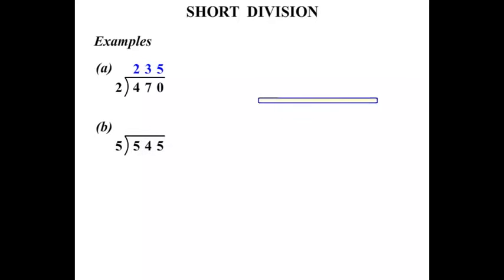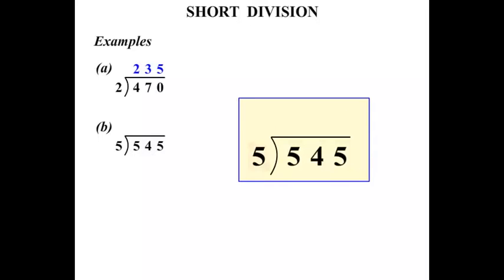The next one, 5 into 545. So we start 5 into 5 goes once. 5 into 4, well, it won't go. We must write 0 there.